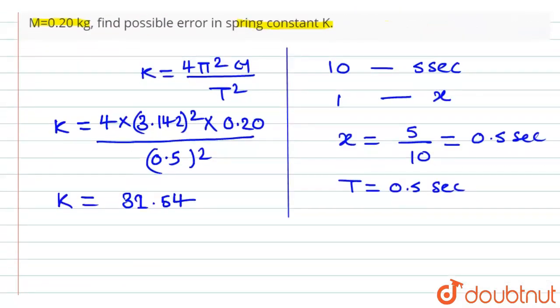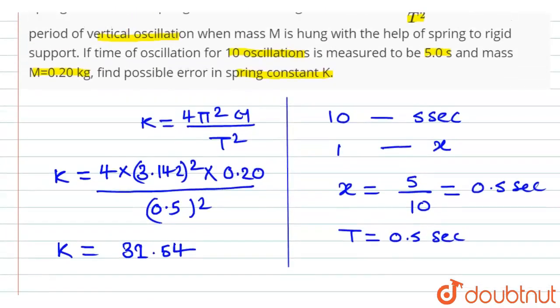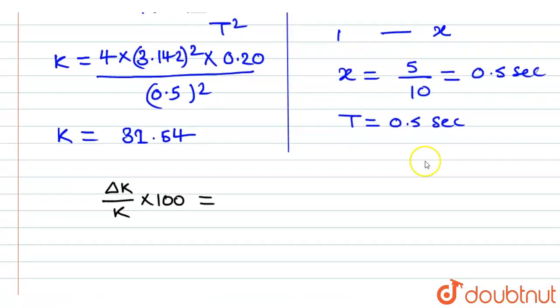Now, to calculate percentage error in the measurement of K, ΔK/K × 100 equals—as 4π² is constant, here we can write the equation as ΔM/M plus twice ΔT/T into 100.